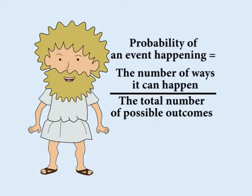To determine the probability of an event happening, you count the number of ways that event can happen and divide it by the total number of possible outcomes.